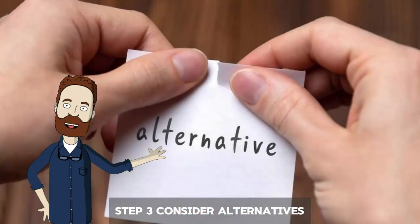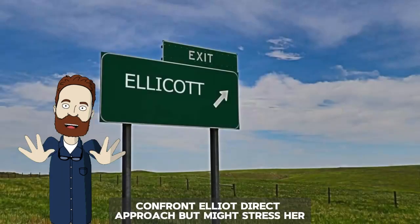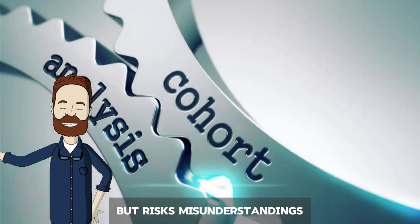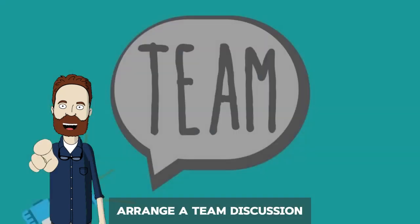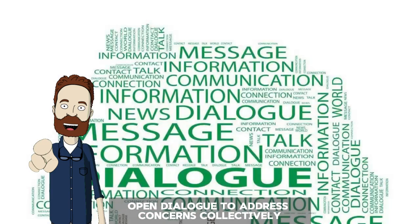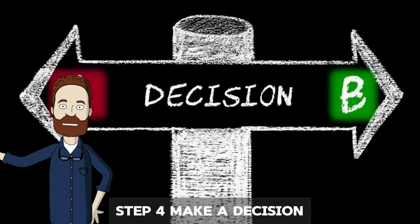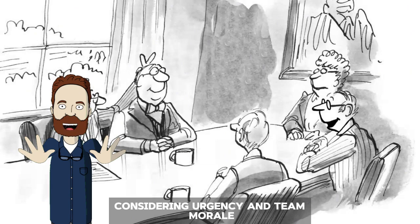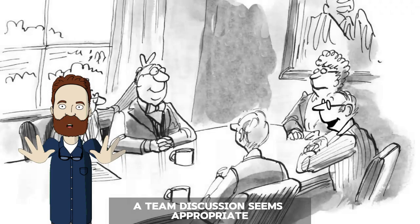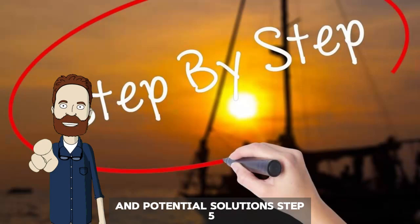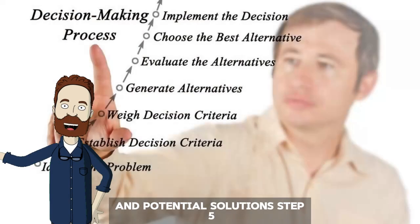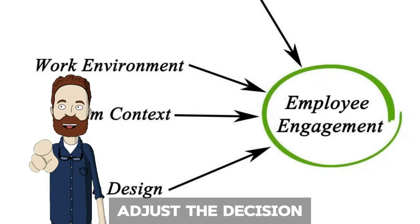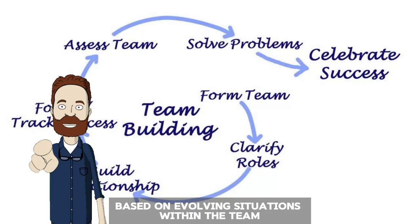Step three — consider alternatives. Confront Elliot directly, which is a direct approach but might stress her. Avoid confrontation — proactive but risks misunderstandings. Or arrange a team discussion for open dialogue to address concerns collectively. Step four — make a decision. Considering urgency and team morale, a team discussion seems appropriate, as it allows for open communication and potential solutions. Step five — evaluate the decision: monitor team dynamics and Elliot's engagement, and adjust the decision based on evolving situations within the team.